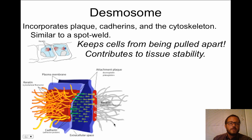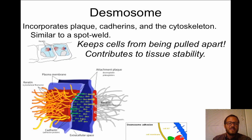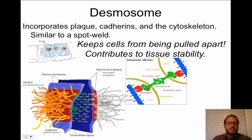Here we see a desmosome. You can see the keratin fibers — part of the cytoskeleton — coming off, like little wild hairs. And there are cadherin-type adhesion proteins that are interlinked to each other, which keeps the cells from being pulled apart. That's a desmosome.